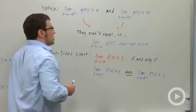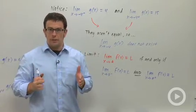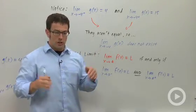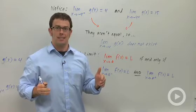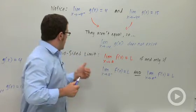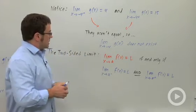Very important. So in order for a two-sided limit like this to exist, you need both of the one-sided limits to exist and for them to be equal. And that's what this theorem states right here.